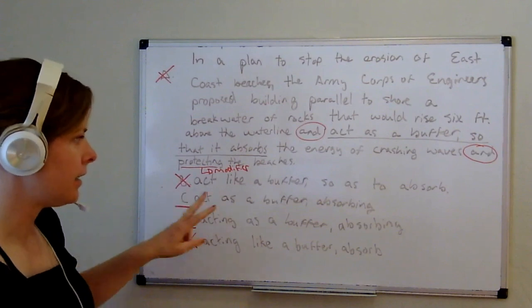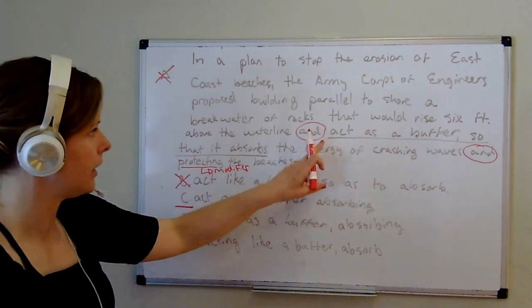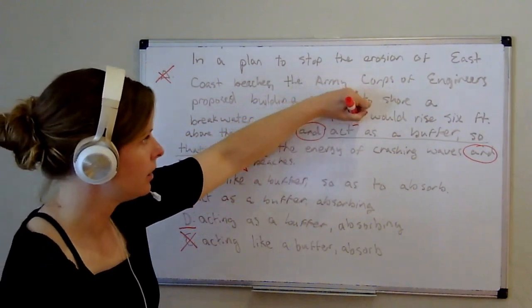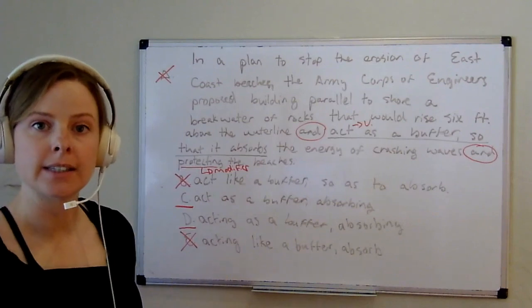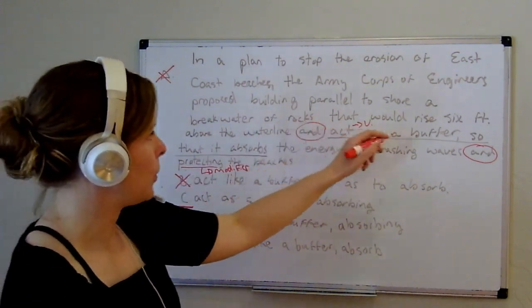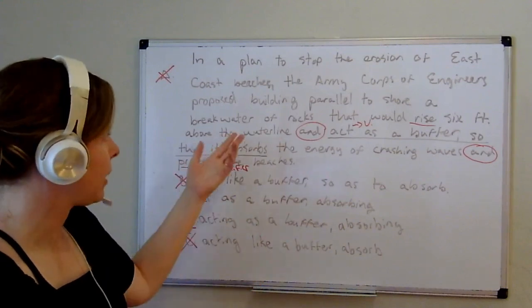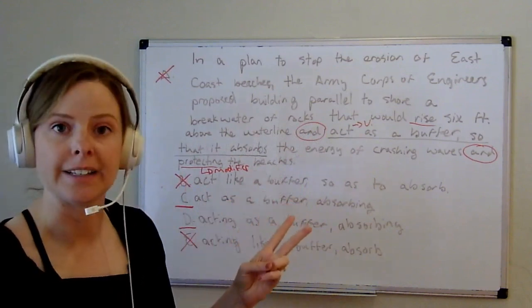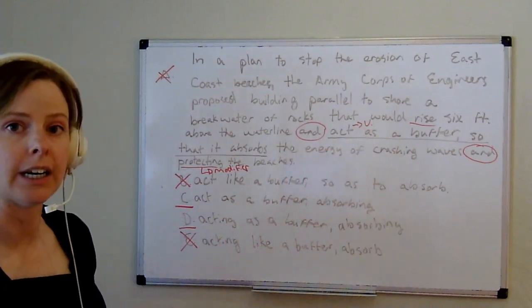Now we're left with C and D. Parallelism at the end looks great for both. Let's look at the first 'and' in C. Immediately following 'and' we have the word 'act,' which is a verb. Is there another verb earlier in the sentence that makes sense to list in parallel with 'act'? Yes — the word 'rise.' So if you list these two things in parallel, this breakwater of rocks would one, rise six feet above the water line, and two, act as a buffer. Grammatically this looks totally fine, meaning-wise it makes sense, and the parallelism looks great in C.